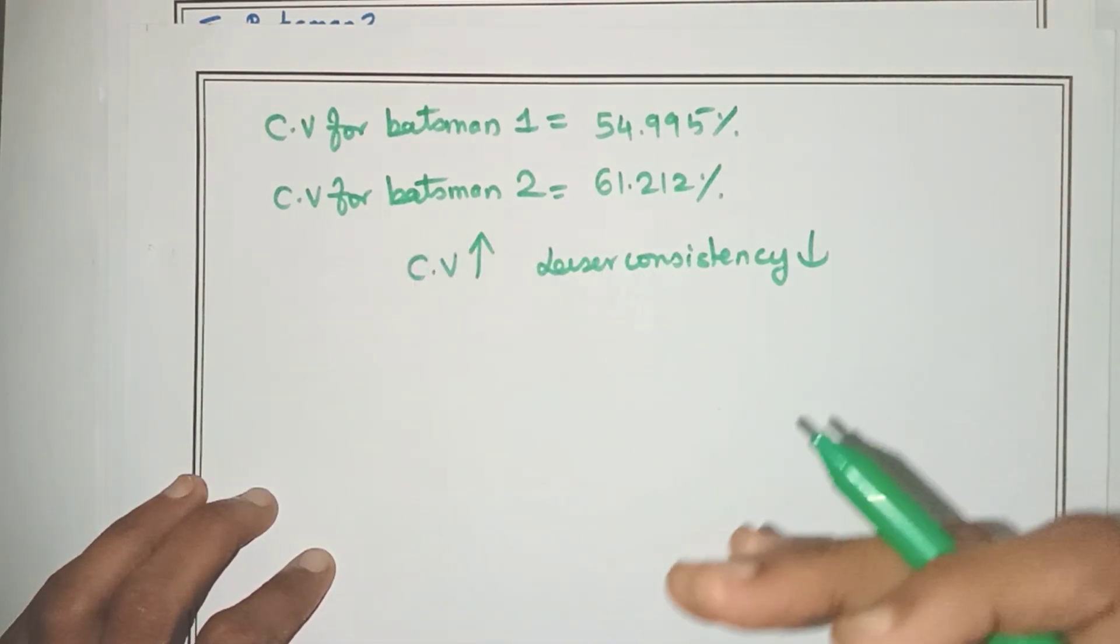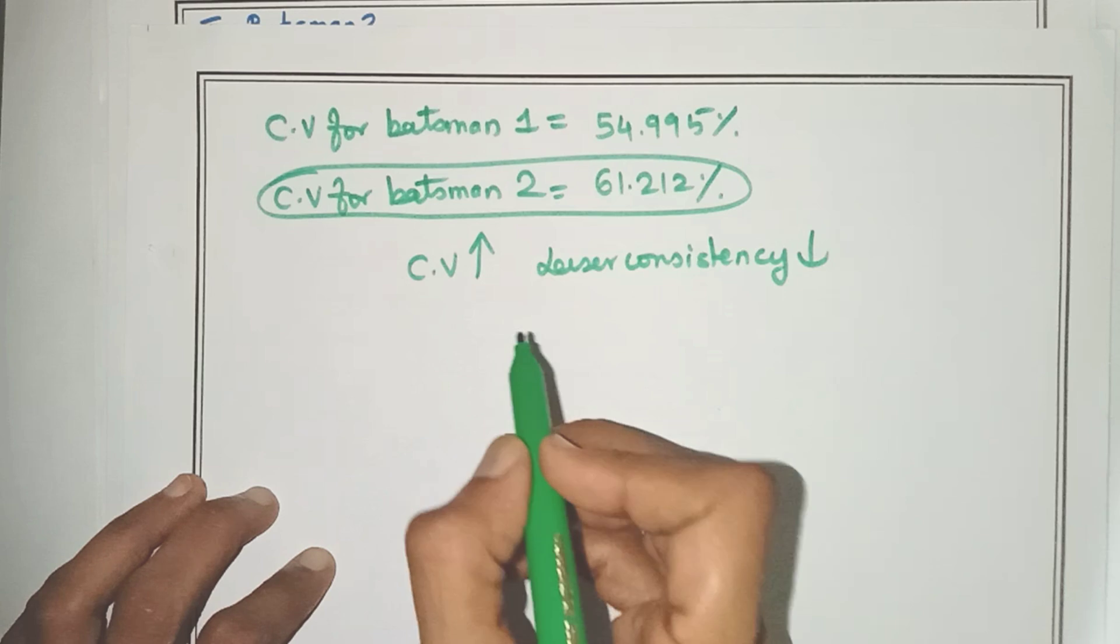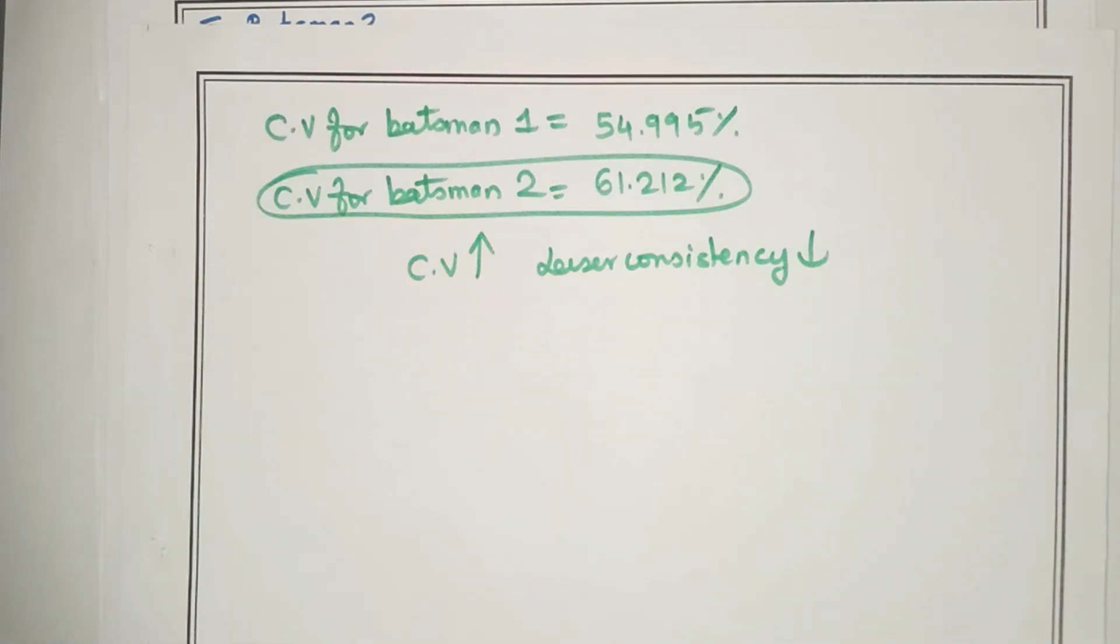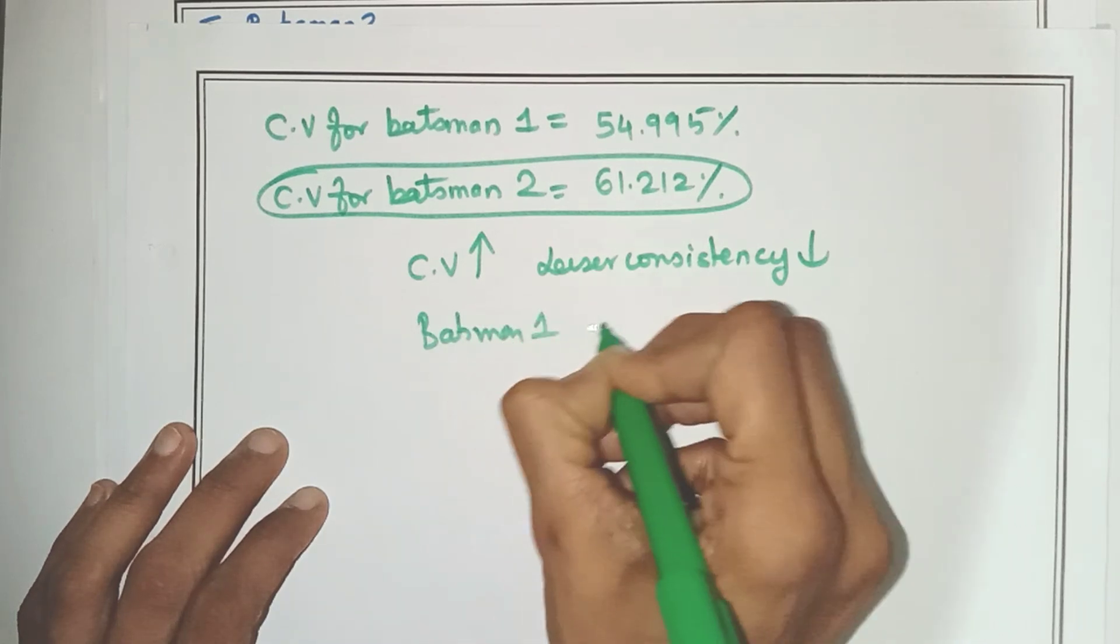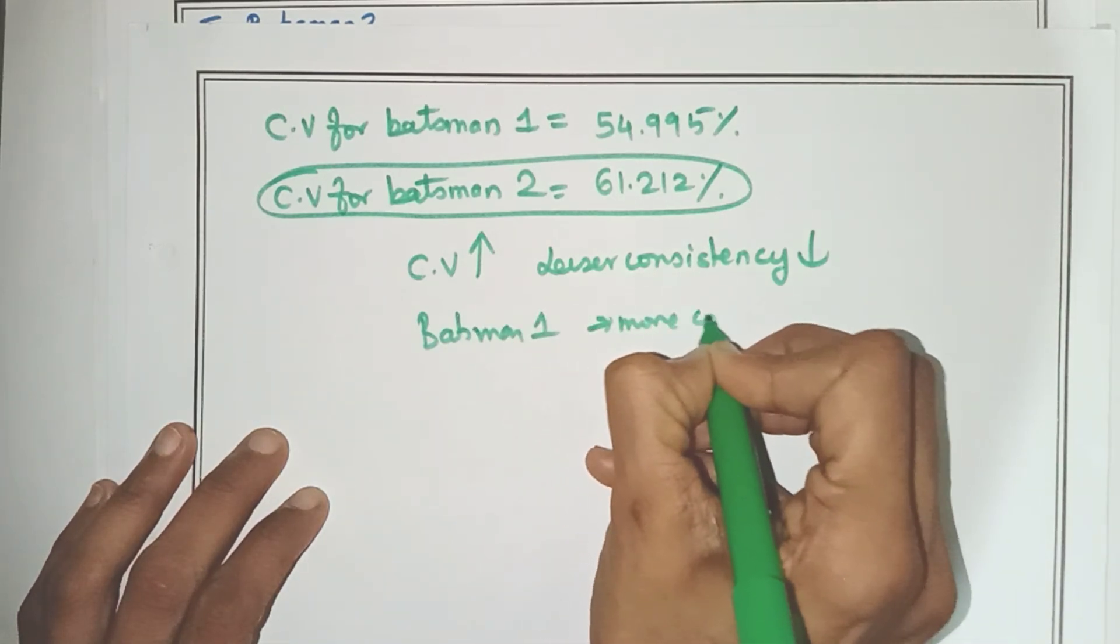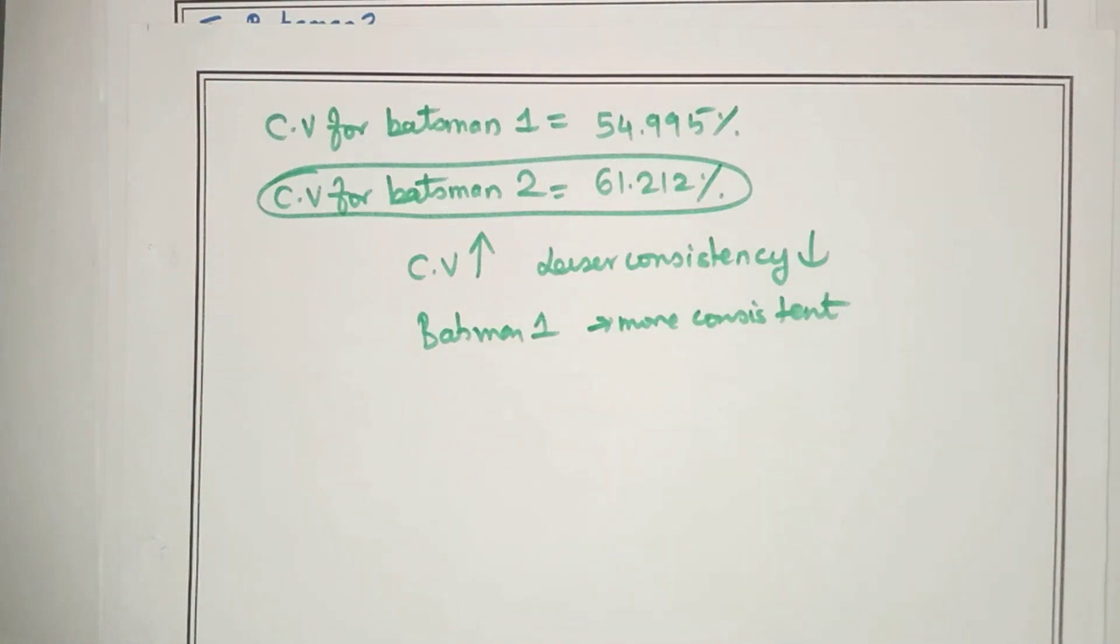So here, who has got a higher CV? Yes, batsman 2 has a higher CV. That means batsman 2 is less consistent. So that means batsman 1 is more consistent because his CV value is lesser than the CV value for batsman 2.